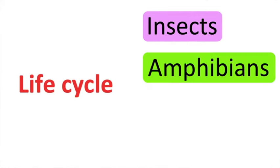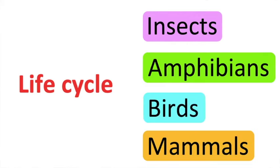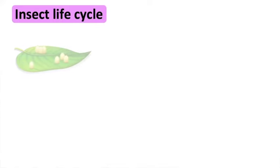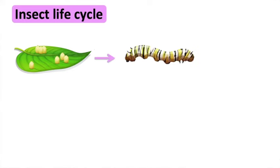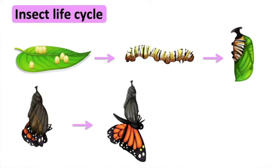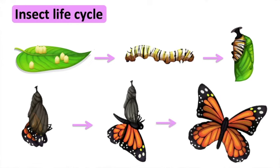The life cycle of an animal is the journey from the start of its life all the way to the end of its life. In this video, we will look at the life cycle of insects, amphibians, birds, and mammals. For the insect life cycle: first, the insect lays eggs. Larva is an immature form of an insect that hatches from the eggs. The larva then becomes a pupa and changes into an adult insect.